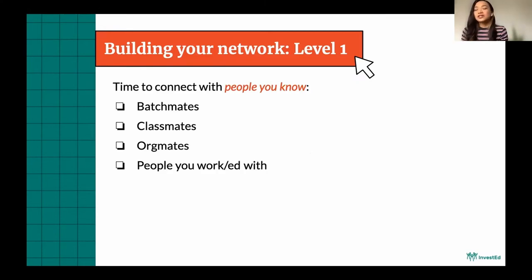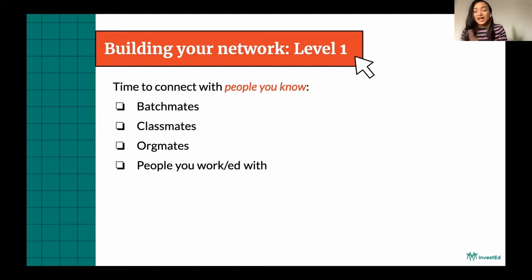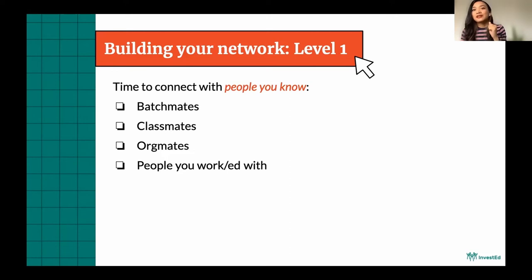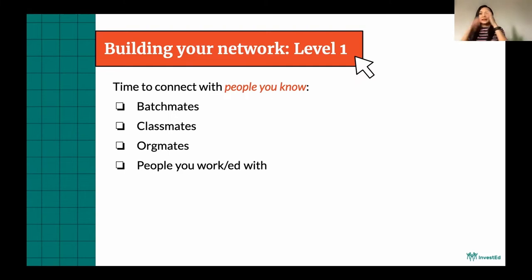For Level 1, just connect with people that you know — batchmates, classmates, orgmates, and people you work with. Very basic stuff: people you already know. Here are the people you can start connecting with to build your network, and you can stop there if you want. You can be strict with yourself and only add people you're sure are going to remember you when they see your name.